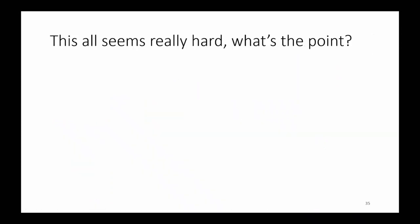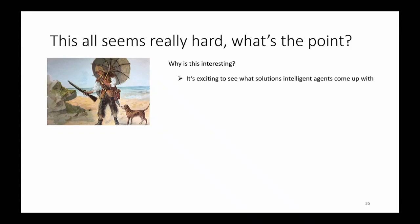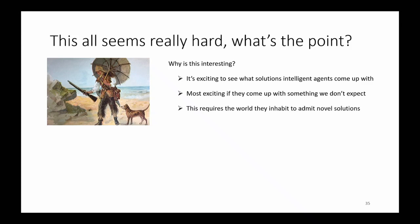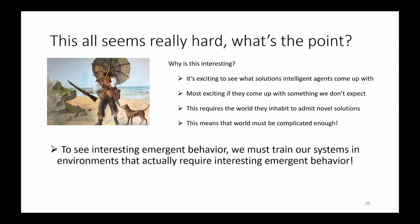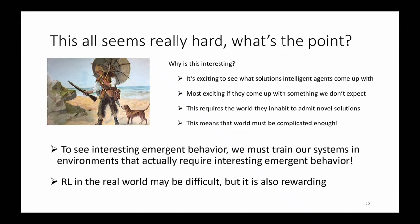This all seems really hard, but to me it's actually really exciting to see what solutions intelligent agents come up with — especially when they come up with something unexpected. That happens rarely in very simple environments, so the world they inhabit must actually admit novel solutions, meaning the world must be complicated. The real world is really complicated. To see interesting emergent behavior, we may have to train RL agents in environments that require it. That's the real world — RL in the real world might be difficult, but it might also be really rewarding.